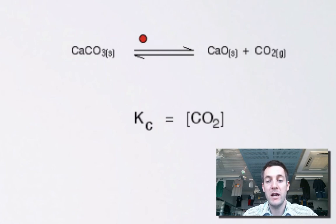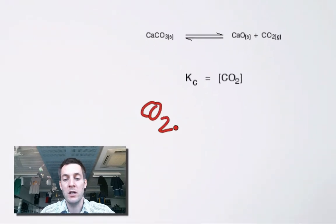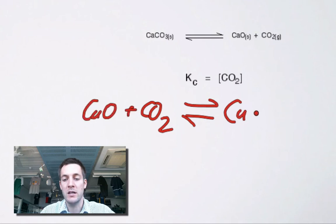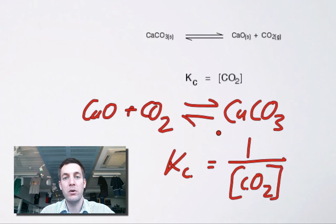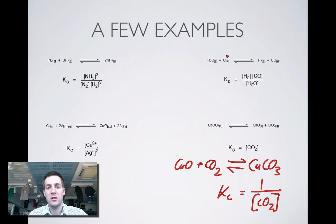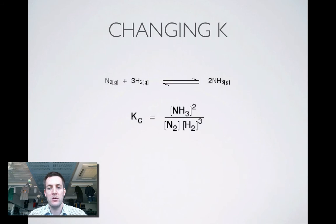If this reaction were written the other way round — CO₂ plus CaO turning into CaCO₃ — then CO₂ becomes a reactant and goes on the bottom, so KC would equal one over the concentration of CO₂. It's important to realize that KC depends on the way the reversible reaction is written: you invert KC if you write the reaction the other way round. Substances that disappear from the expression effectively become ones rather than zeros.